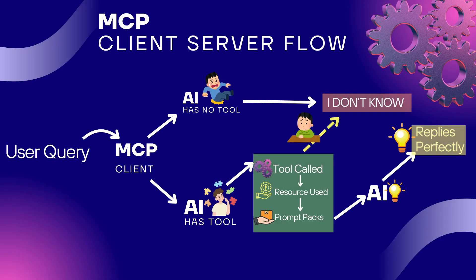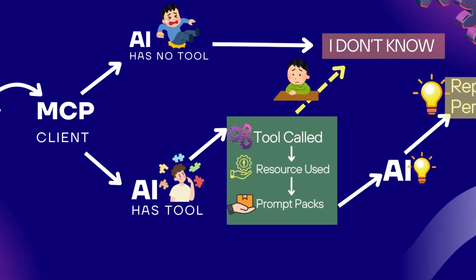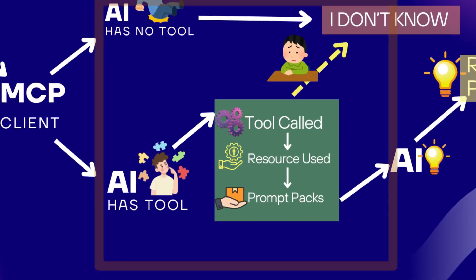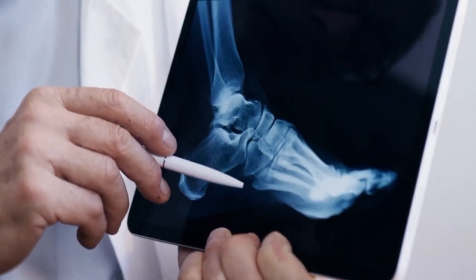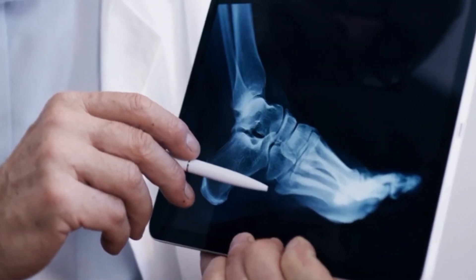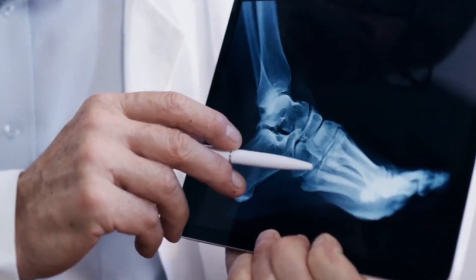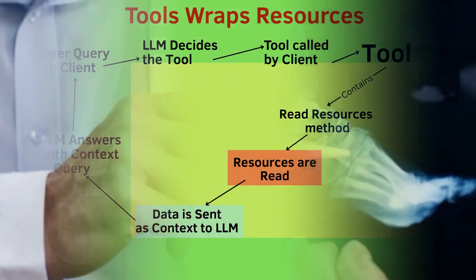If you thought having tools, template resources, and prompts would make things a walk in the park, you couldn't be more wrong. More moving parts mean more chances for things to break, and some of those bugs can be seriously hard to track down. Running your server with the MCP inspector is like having x-ray vision into your MCP setup.